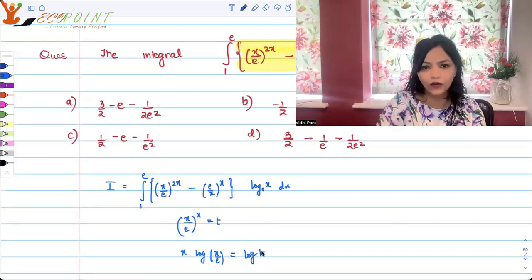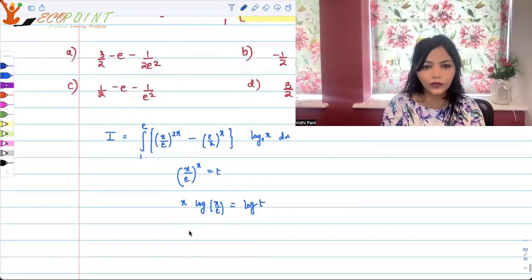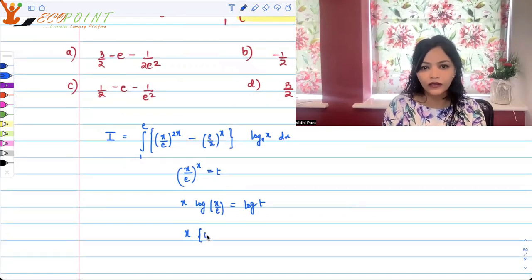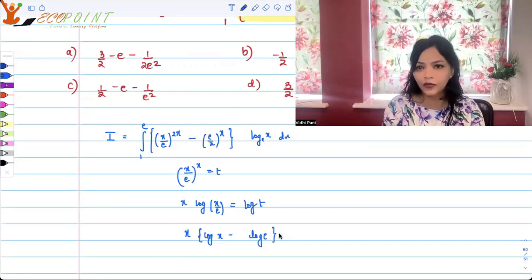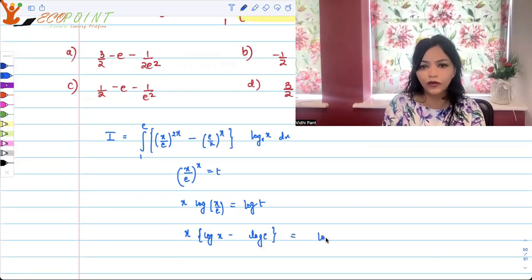Then that means x log x by e is equal to log t. Taking log on both the sides, this is what you will get. And therefore, x, I can say that this is log x minus log e, that's a property of logarithm, is equal to log t.